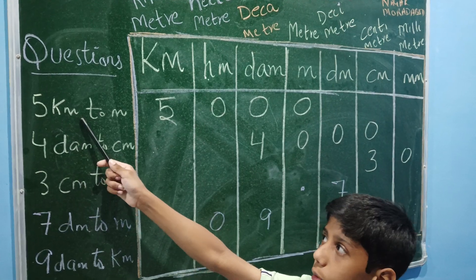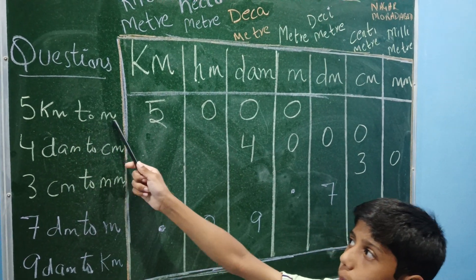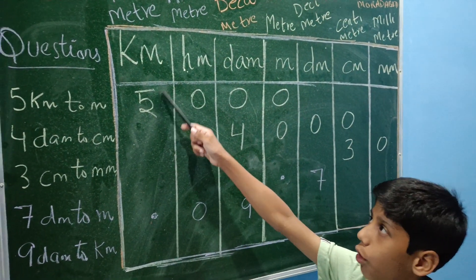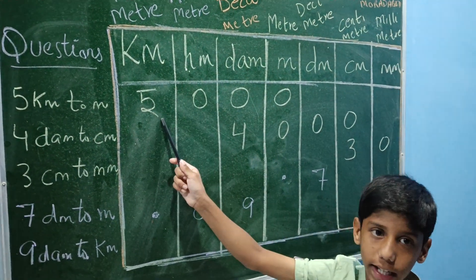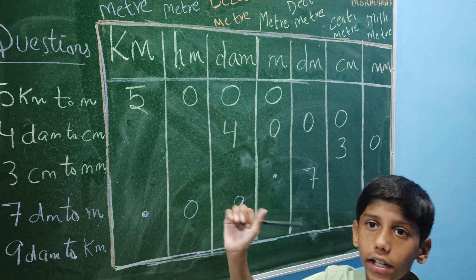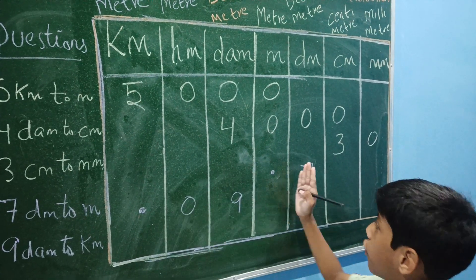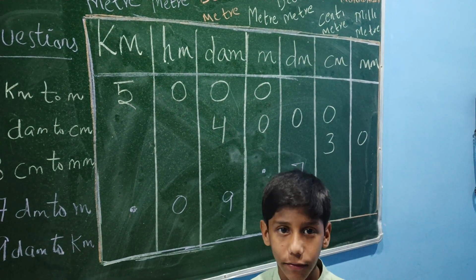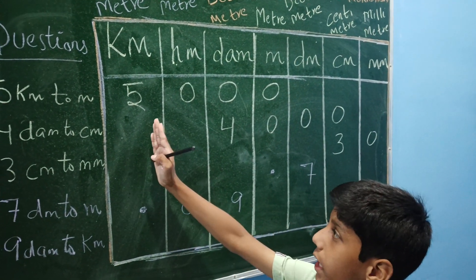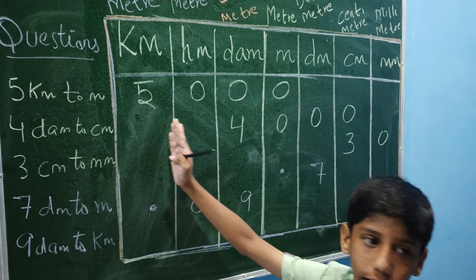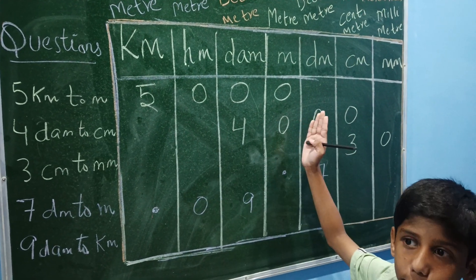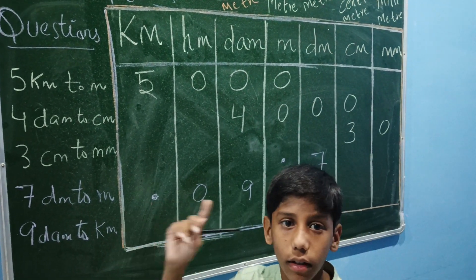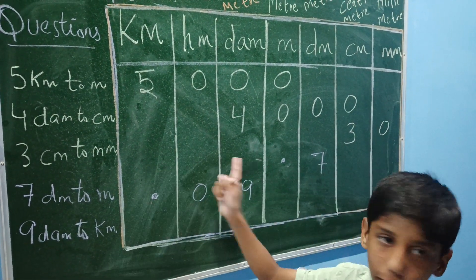Question: 5 kilometer to meter. So we will write 5 in kilometer. There is a 10-times difference between each of these units. So when we move from one unit to the next, we multiply by 10.